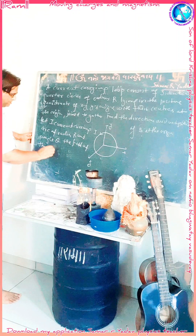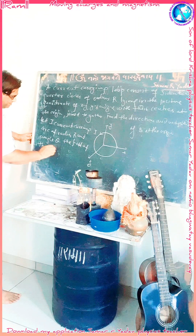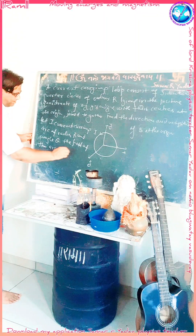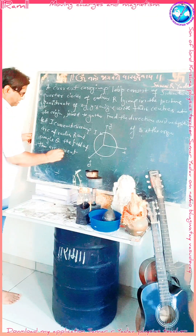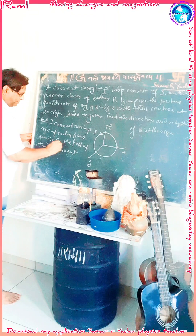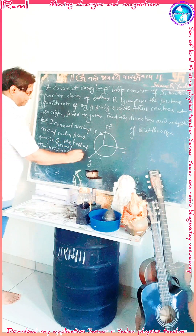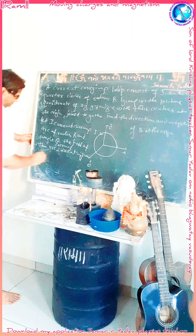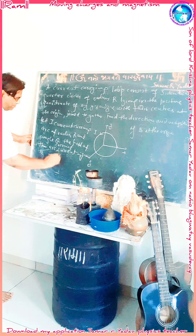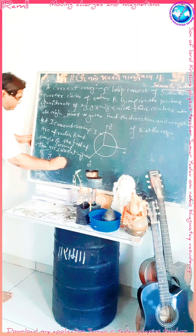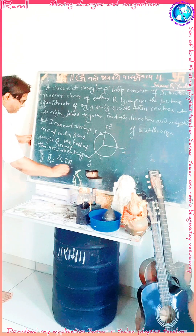The magnetic field of a current-carrying arc is given by: B = μ₀ i θ / (4π r), where θ is the angle subtended by the arc, i is the current, and r is the radius.